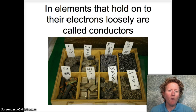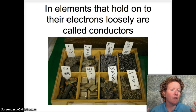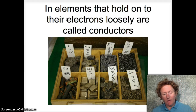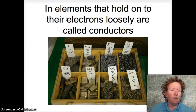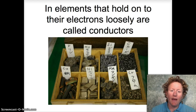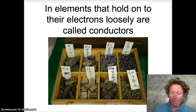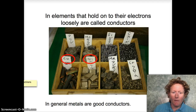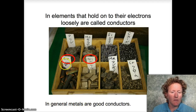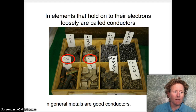In elements that hold on to their electrons loosely, they're called conductors. If they let their electrons run around and don't really care where the electrons are, that's a conductor. In general, metals — especially copper — are really good conductors.